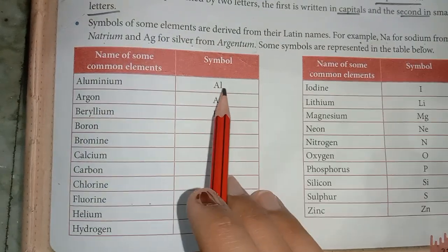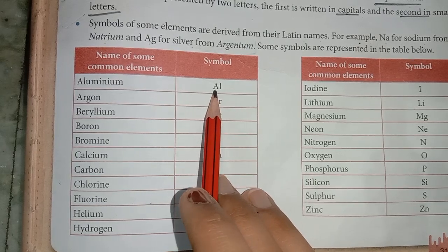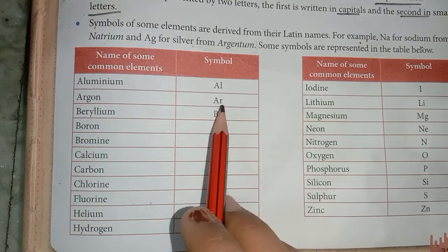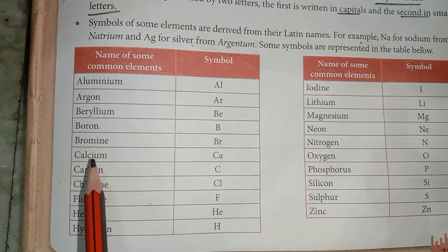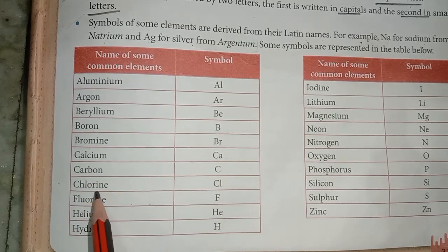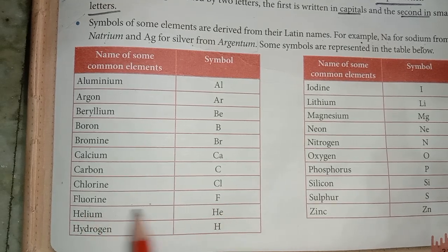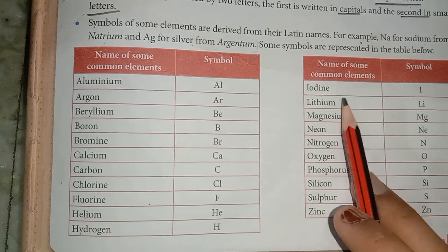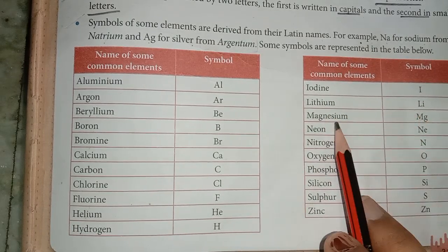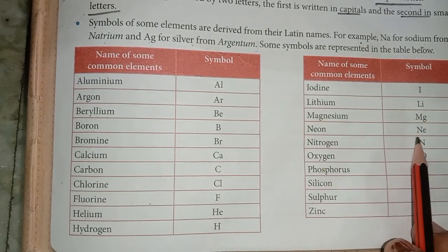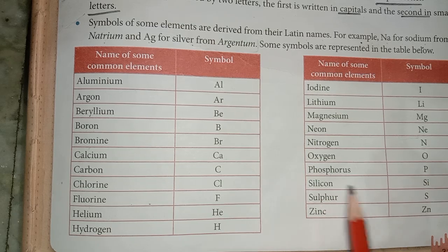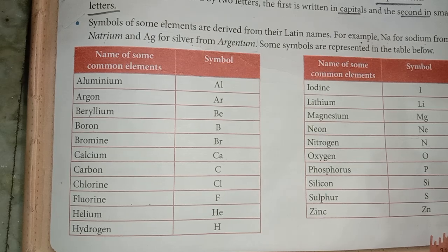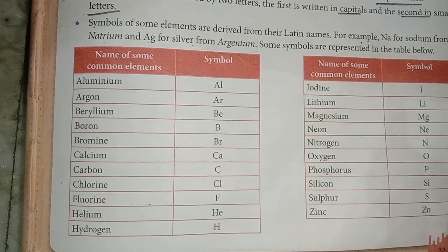Common element symbols: Aluminium – Al, Argon – Ar, Beryllium – Be, Boron – B, Bromine – Br, Calcium – Ca, Carbon – C, Fluorine – F, Helium – He, Hydrogen – H, Iodine – I, Lithium – Li, Magnesium – Mg, Neon – Ne, Nitrogen – N, Oxygen – O, Phosphorus – P, Silicon – Si, Sulphur – S. Practice these daily for 10 minutes to memorize them.